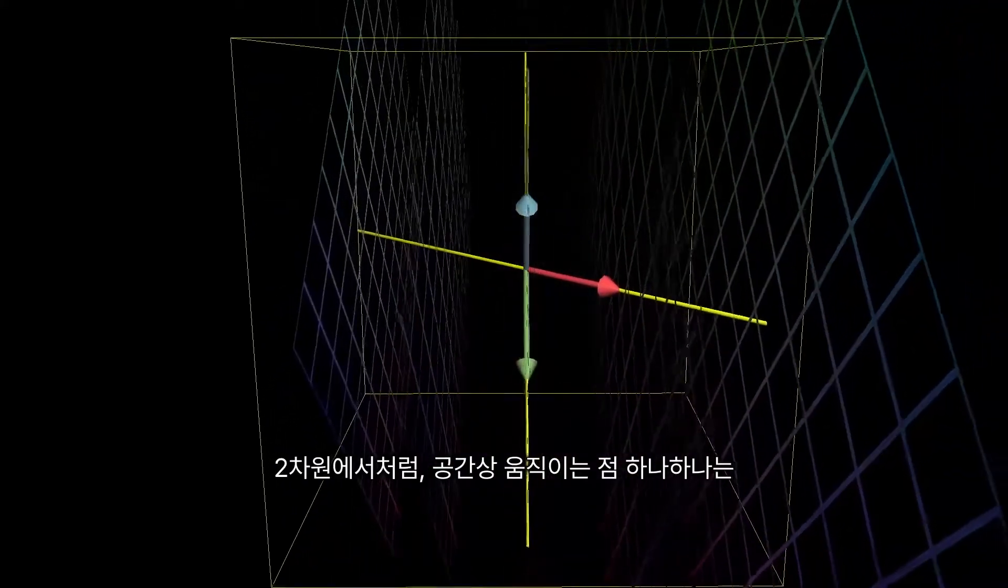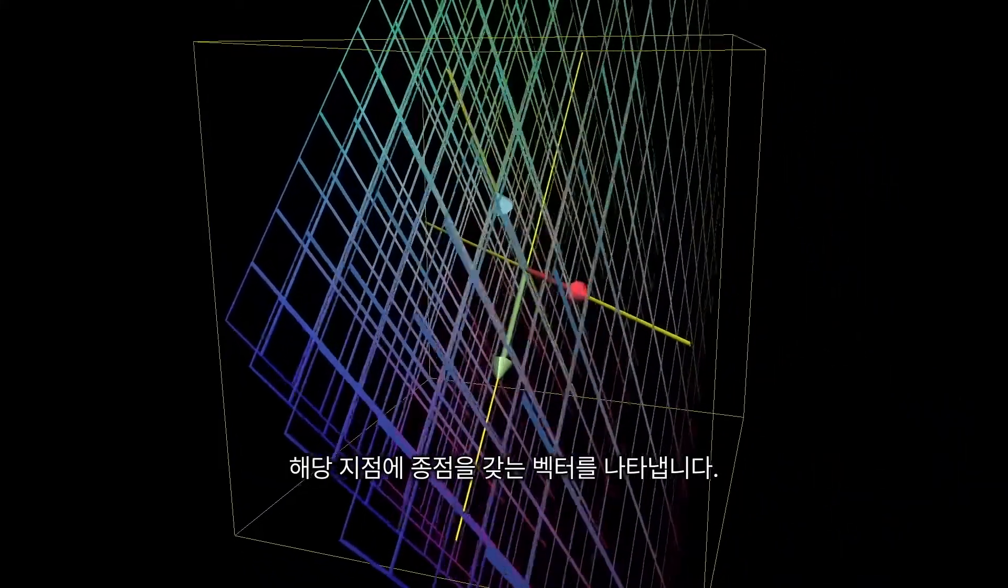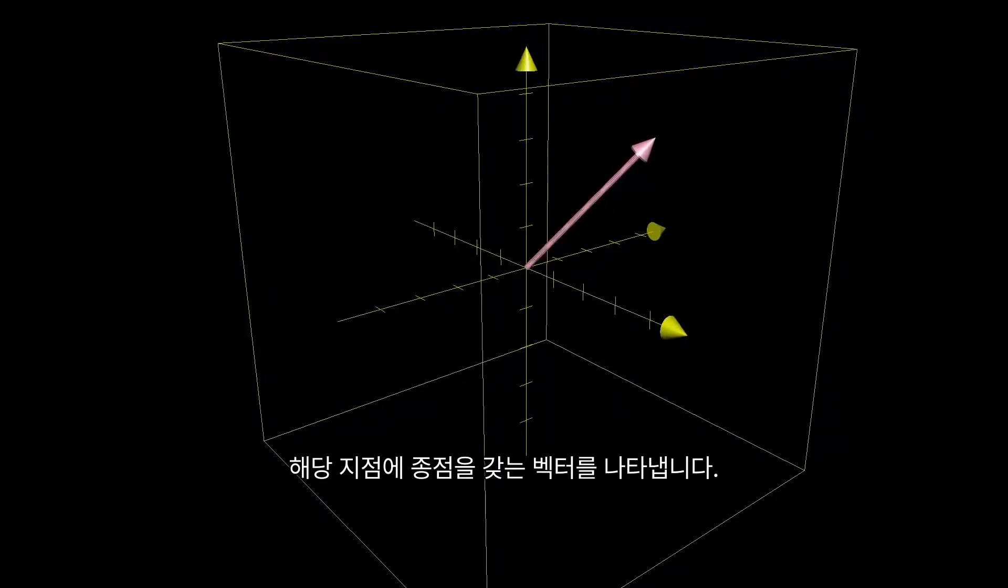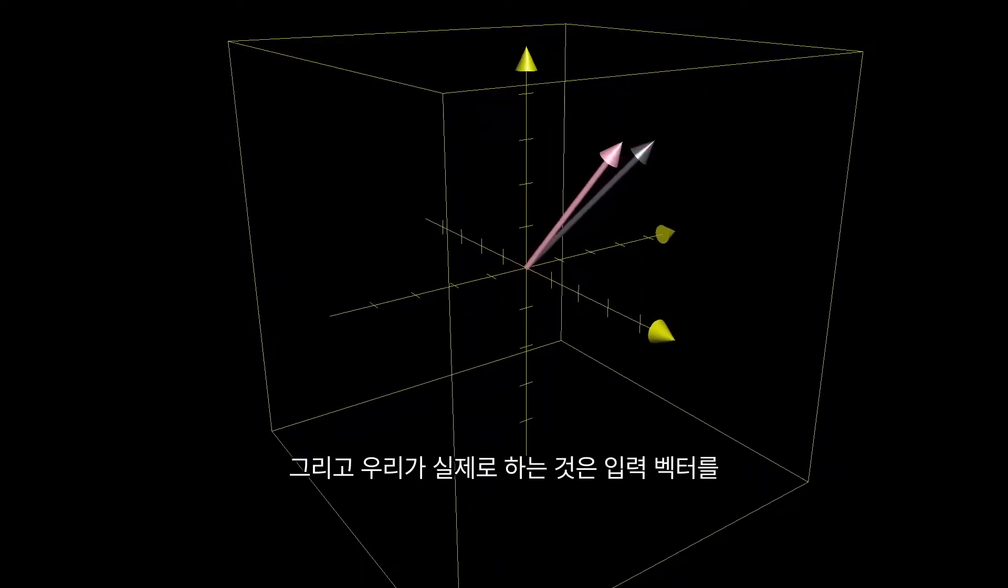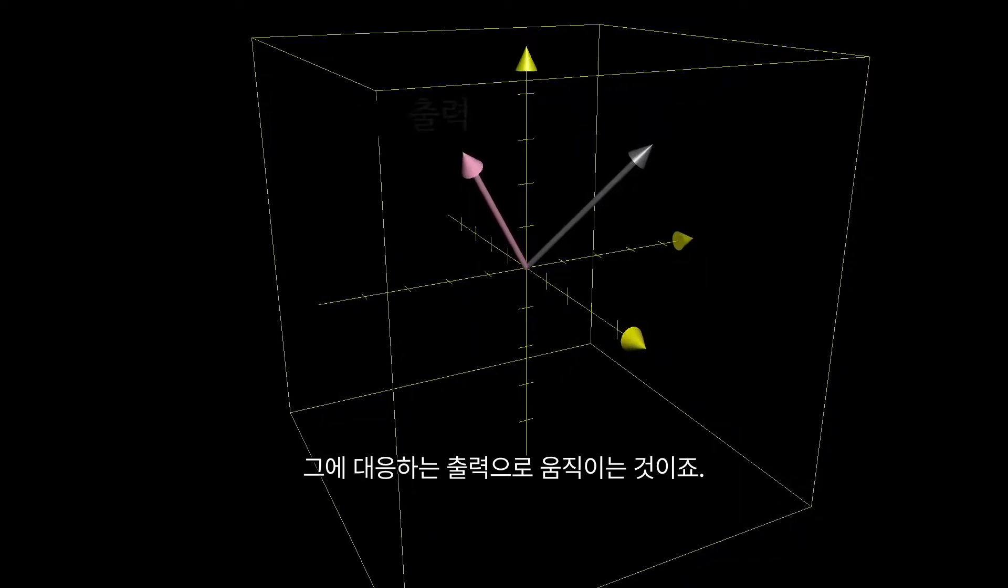And just as with two dimensions, every point of space that we see moving around is really just a proxy for a vector who has its tip at that point. And what we're really doing is thinking about input vectors moving over to their corresponding outputs.